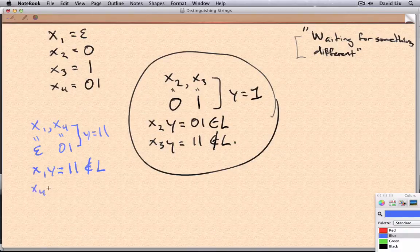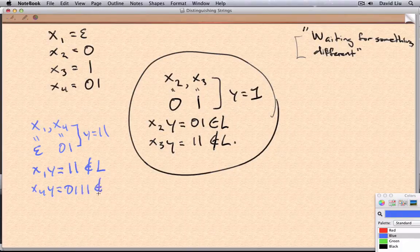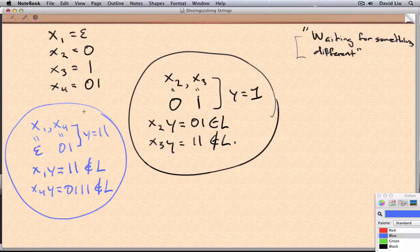On the other hand, X4Y, it wasn't waiting for anything. It knows that it's in L. And there's our proof of distinguishability between X1 and X4.